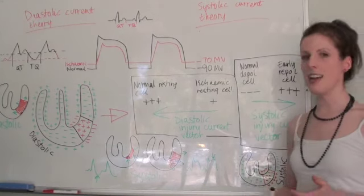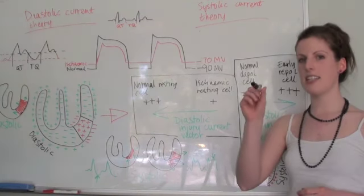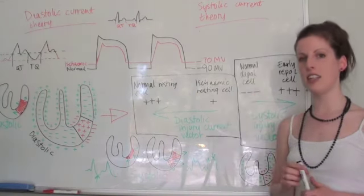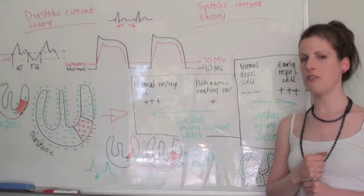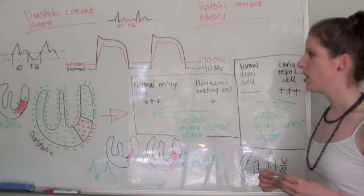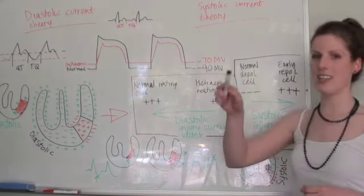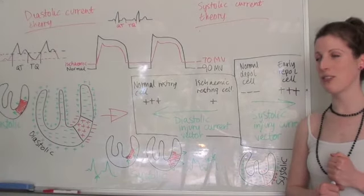I.e., in a STEMI or transmural, you see ST elevation. And in a subendocardial infarct or mainly an NSTEMI, you will see ST depression. So I hope that was helpful and you're not too confused.